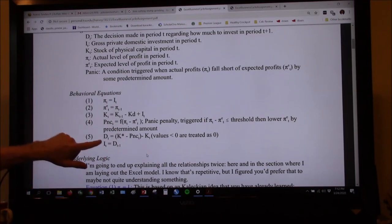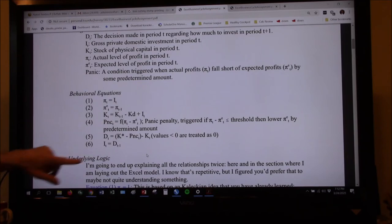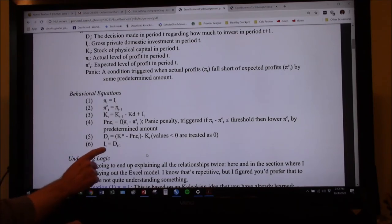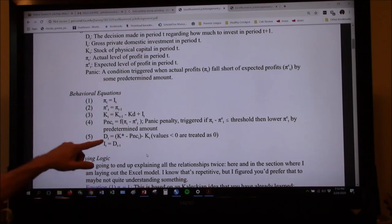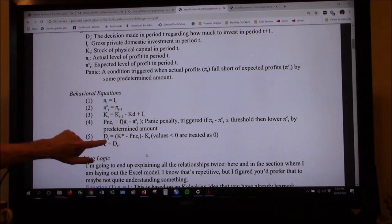Let me skip down to six because it's really easy and then we'll struggle through five right there. Six is saying that investment in period T, and I already mentioned this up above, is whatever you decided it was going to be back in period T minus one. But what did you decide? What did you decide back in period T? What were you thinking about doing next quarter?